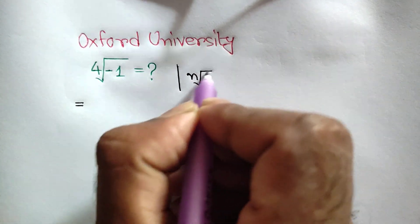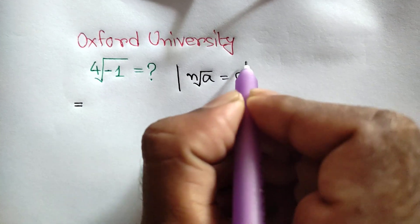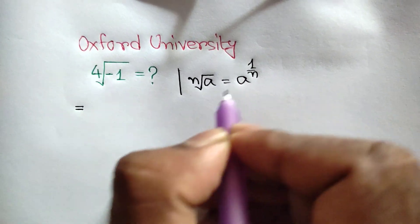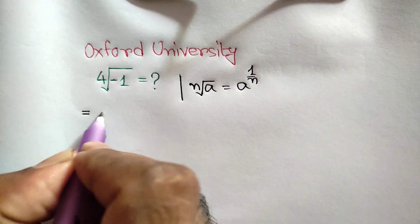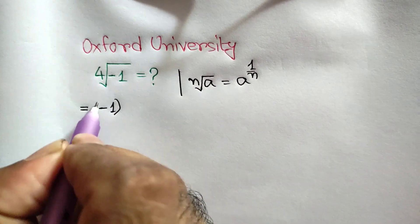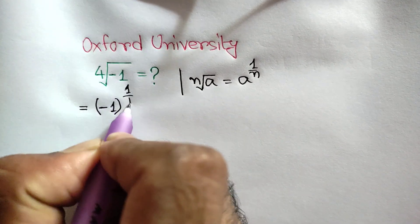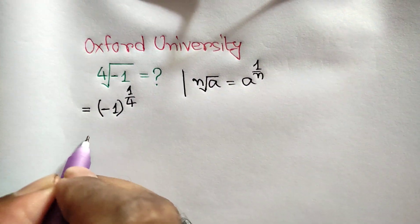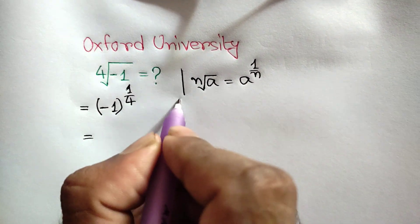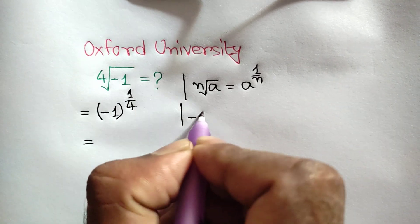We know that the nth square root of a is equal to a to the power one over n. Applying this rule here, we will get negative one to the power one over four.